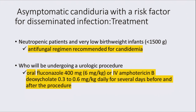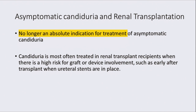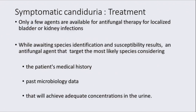These are the dosage schedules for asymptomatic candiduria in high-risk patients. Asymptomatic candiduria in renal transplant patients is no longer an absolute indication for treatment, but should be considered if there is a high risk of graft or device involvement, such as early after transplant when stents are in place. For symptomatic candiduria treatment, we have only a few agents available for therapy of localized bladder or kidney infection. While awaiting the culture sensitivity report, we should start empirically, keeping in mind the patient's past medical history, past microbiology data, and the agent that will have adequate concentration in the urine.